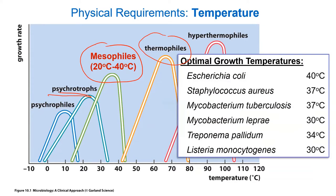Looking at optimal growth temperatures for clinically relevant organisms: E. coli is 40 degrees. E. coli is not exclusive to humans — it grows in anything warm-blooded including birds and mammals, and birds' body temperatures are higher than mammals, which explains why 40 degrees is its optimal. It will grow very well at lower temperatures too.